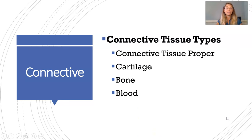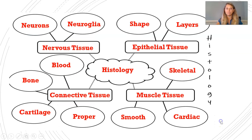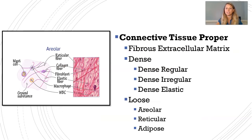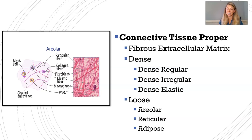There are four subcategories of connective tissue: connective tissue proper, cartilage, bone, and blood. Connective tissue proper is all about the fibrous extracellular matrix — what fibers are present and how they are arranged. If the fibers are dense, the tissue could be dense regular, dense irregular, or dense elastic depending on the fiber type and arrangement. If the fibers are loosely arranged, it could be areolar tissue, reticular tissue, or adipose tissue.